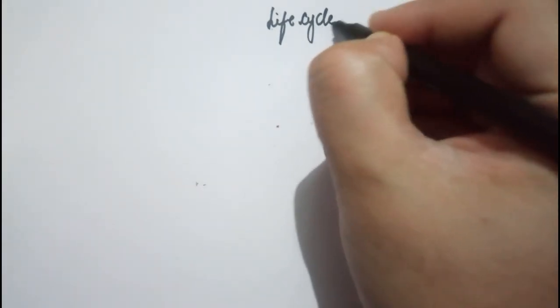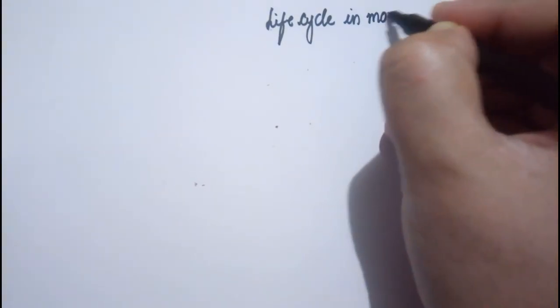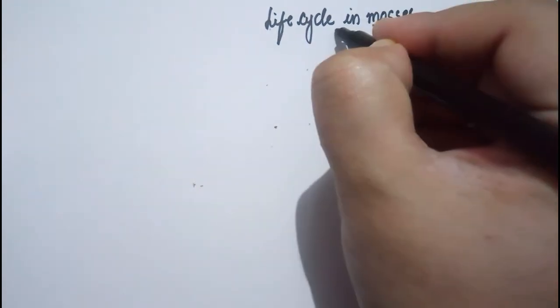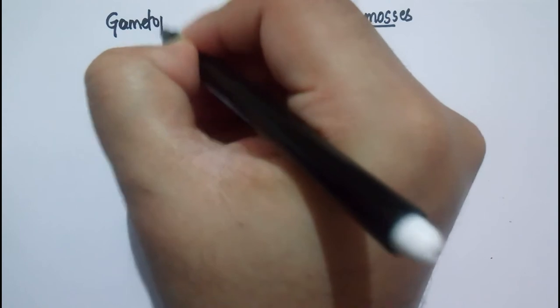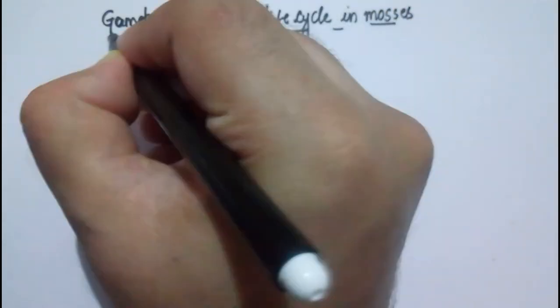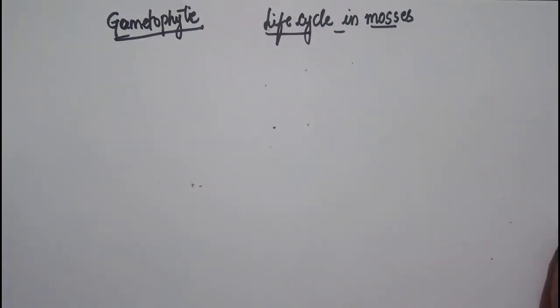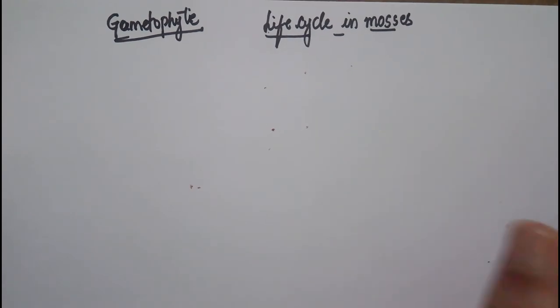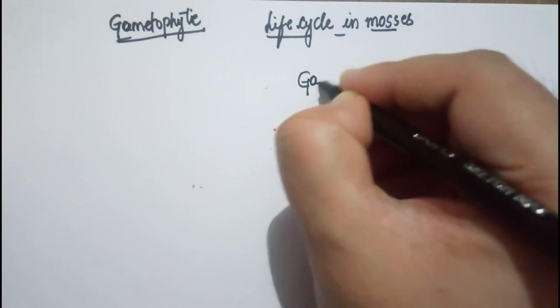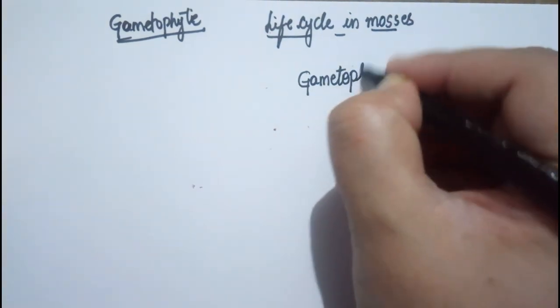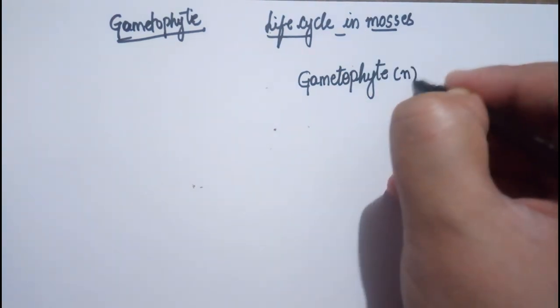Welcome back. Now we'll be seeing the life cycle in the case of mosses. Mosses are bryophytes. In the case of bryophytes, the dominant stage in the life cycle is the gametophytic stage. The sporophyte is dependent on the gametophyte. The dominant stage is the gametophyte, which is the gamete-producing structure and it is haploid.